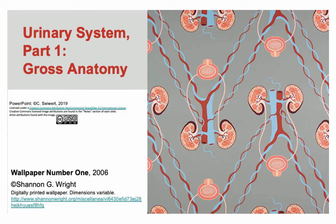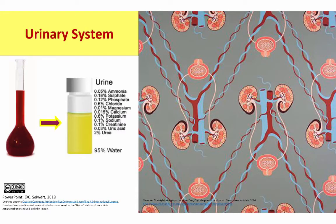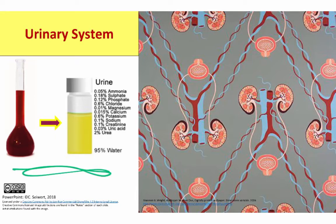Hi folks, welcome to part one of the urinary system. In this section of the lecture we're going to focus on the gross anatomy, or the visible anatomy, of the urinary system. This image shows you really what the urinary system is all about, which is filtering and cleansing blood in order to get rid of metabolic waste. It is not about making pee, although urine is in fact the end product.